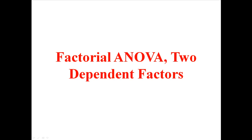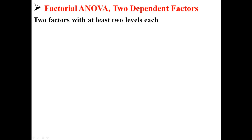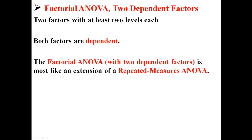In this lecture, we're going to do one of the more time-consuming factorial ANOVAs, which is one that has two dependent factors. In this ANOVA, there are two factors with at least two levels each, and both factors are dependent. The factorial ANOVA with two dependent factors is kind of like an extension of a repeated measures ANOVA, except now instead of dealing with just one independent variable, you're dealing with two independent variables.